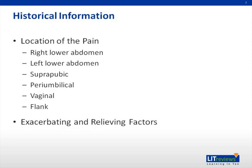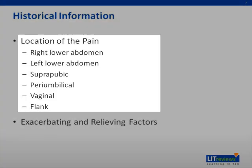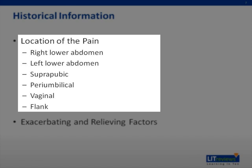The history is extremely important. Asking the patient where the location of the pain is — whether the pain is located in the right lower quadrant, the left lower quadrant, suprapubic region, the peri-umbilical region, vaginal plane, or flank — can really help narrow the diagnosis down. If possible, ask the patient to point with one finger to where their pain is located.